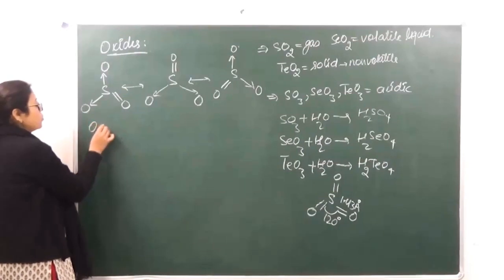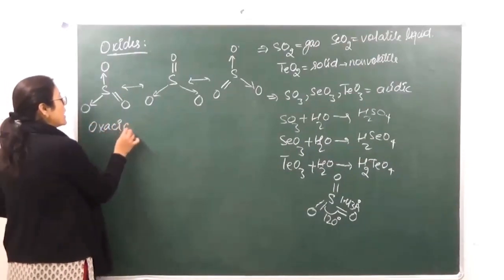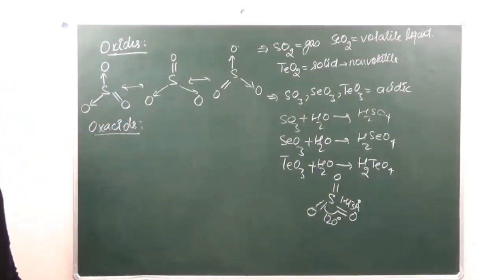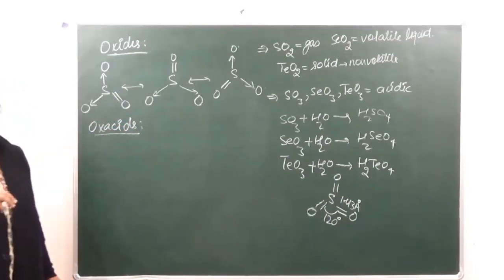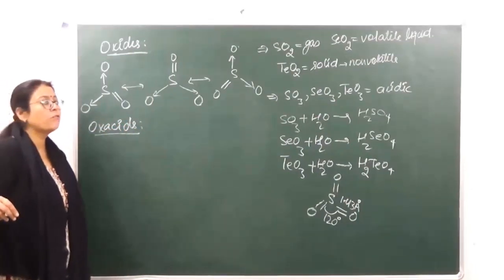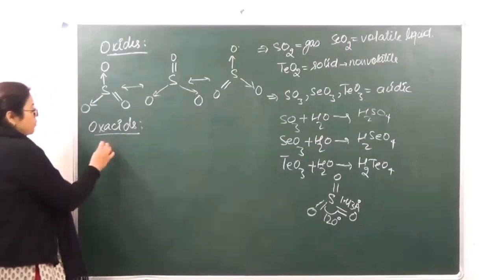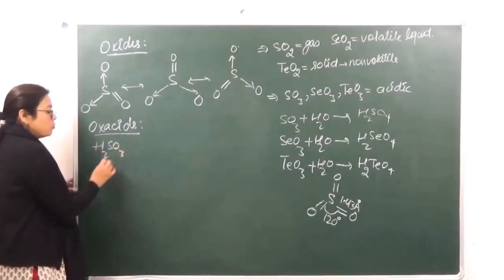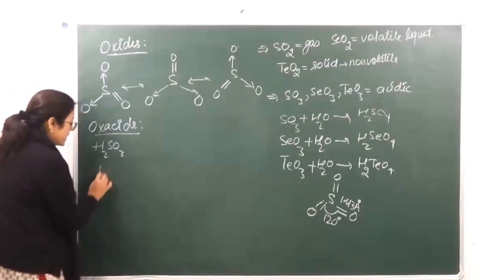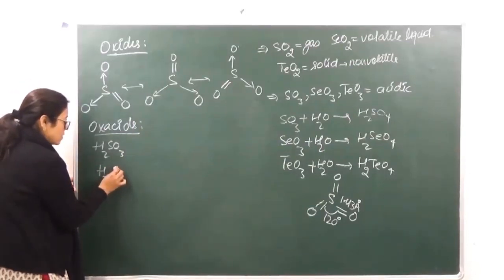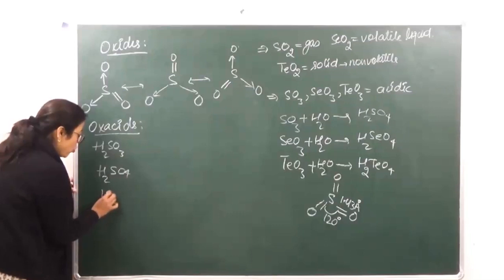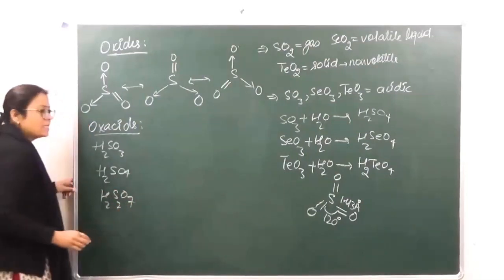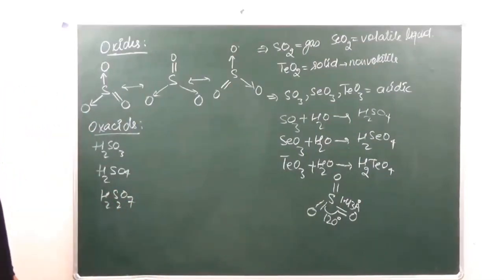Next we come to oxa acids of Group 16. When we are talking of oxa acids, sulfur forms a lot of acids. The most common ones are sulfurous acid, sulfuric acid, and oleum H2S2O7. These are some of the common acids.